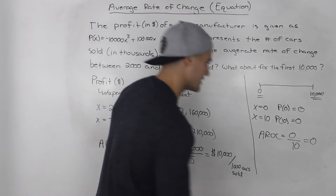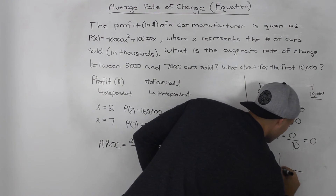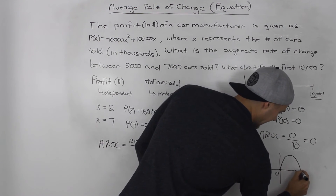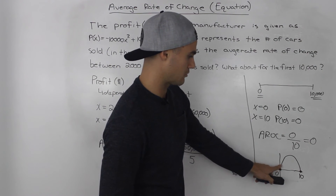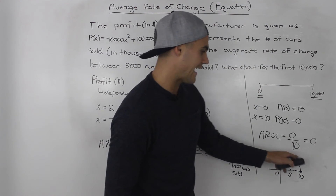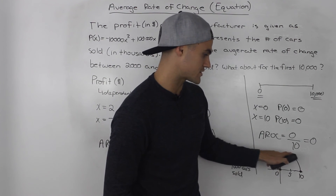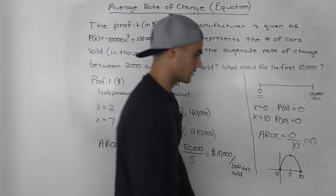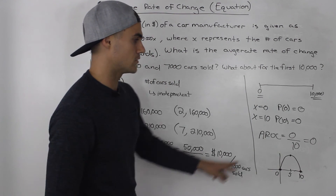You may wonder why that is. If you graph this equation, you get a parabola that starts at the origin at x = 0, and also hits a profit of 0 at x = 10. The manufacturer makes profit all the way up, reaching maximum profit at 5,000 cars. After that, profit starts declining — perhaps workers get more tired — and at 10,000 cars sold the profit is back to 0. Drawing a secant line between these two points gives a horizontal line with slope 0.